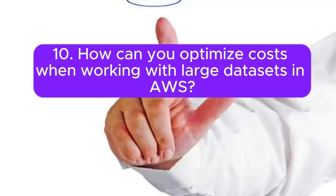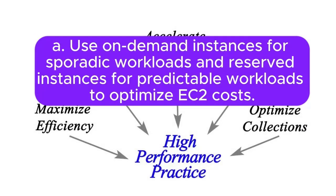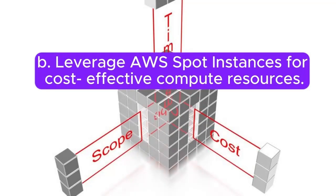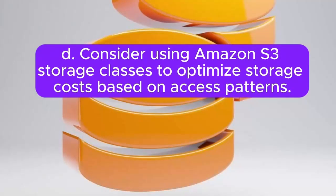10. How can you optimize costs when working with large datasets in AWS? Answer: A. Use on-demand instances for sporadic workloads and reserved instances for predictable workloads to optimize EC2 costs. B. Leverage AWS Spot Instances for cost-effective compute resources. C. Use auto-scaling to automatically adjust resources based on demand. D. Consider using Amazon S3 storage classes to optimize storage costs based on access patterns.